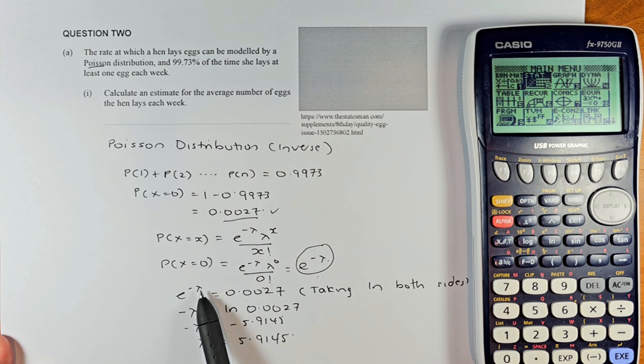When you ln both sides, the minus lambda comes down and ln e becomes 1, so minus lambda equal to ln 0.0027. Put in your calculator, ln 0.0027 is going to be minus 5.9145.